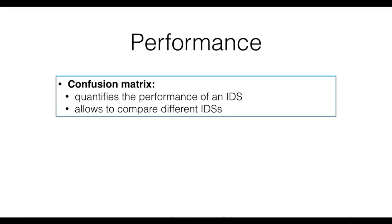To summarize, the confusion matrix allows us to quantify the performance of the IDS. Once this is done, we are able to say how well an IDS performs given a certain ground truth, but we are also able to compare, in a verifiable manner, different IDSs.